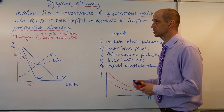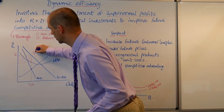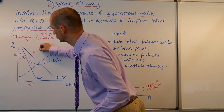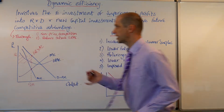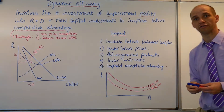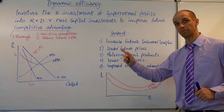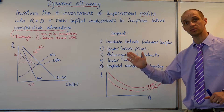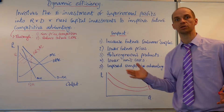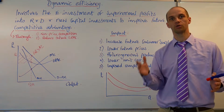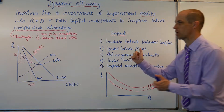We can see average revenue is greater than average cost at this point, and that fulfils the key condition of supernormal profits. We just need that firm to make sure they use that profit wisely — they don't just distribute it to their shareholders in dividend payments.